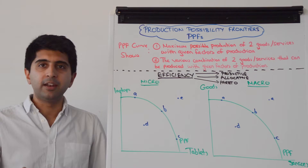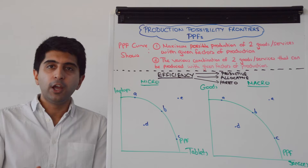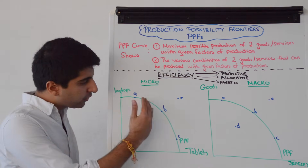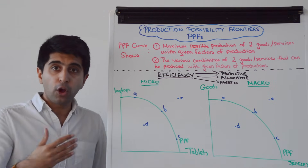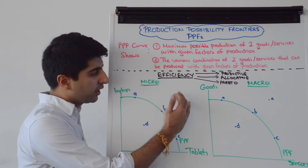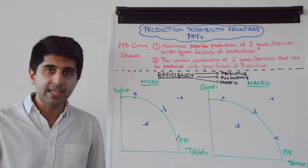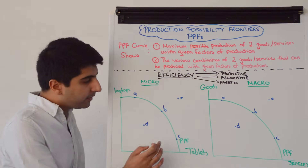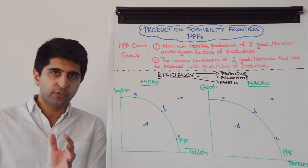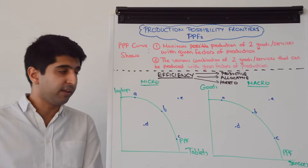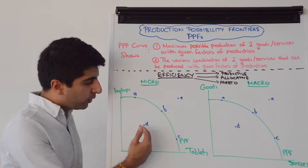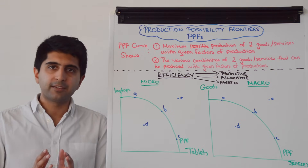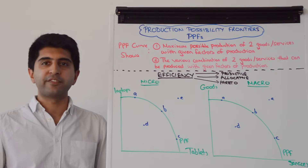Point E, beyond the curve, is unattainable with our given factors of production. This firm can only produce at a point on the curve — they cannot produce beyond it yet with their current factors of production. So points A, B, and C are productively efficient; any point on the curve is productively efficient, and any point inside the curve is productively inefficient.